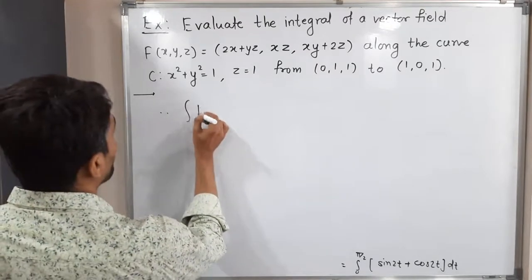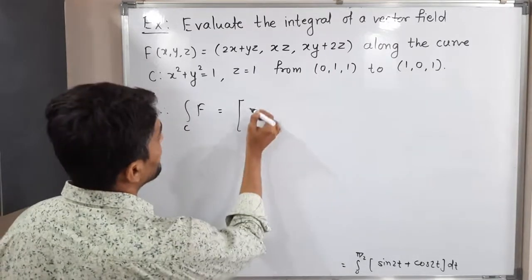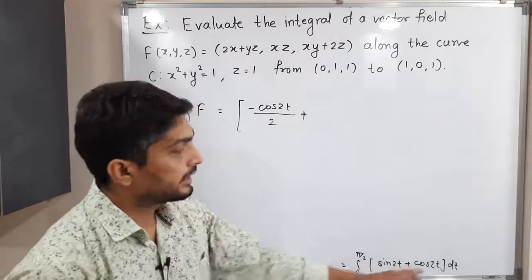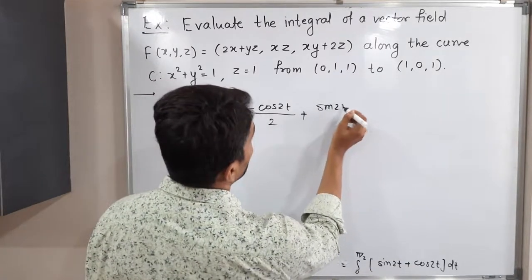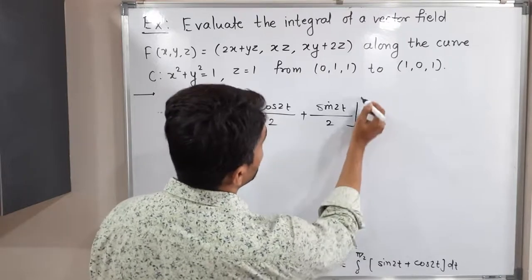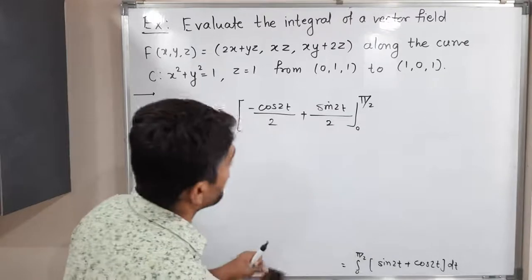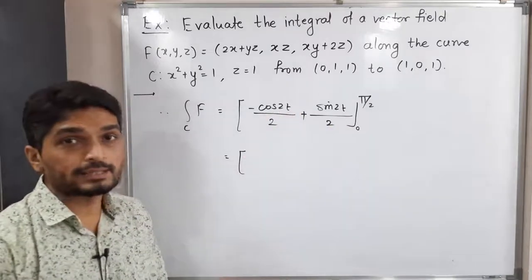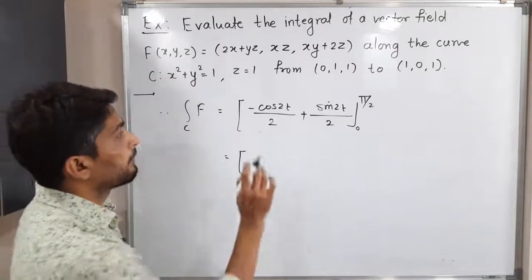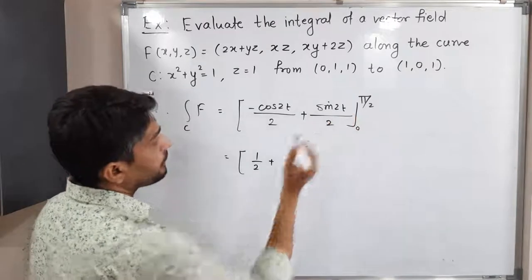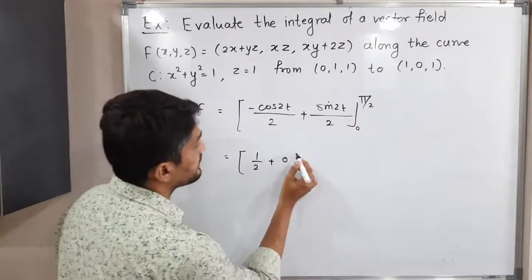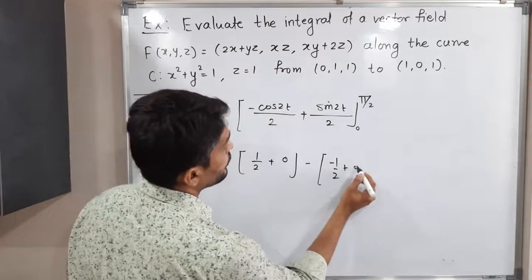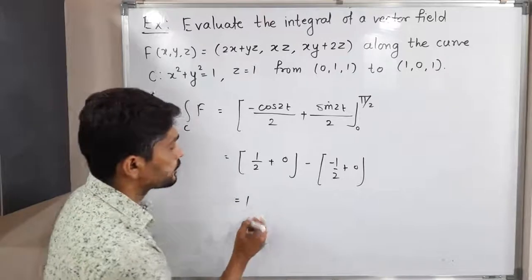The line integral of f over C equals: the integral of sin 2t gives −cos 2t / 2, and the integral of cos 2t gives sin 2t / 2, evaluated from 0 to π/2. Putting in π/2: −cos(π)/2 + sin(π)/2 = −(−1)/2 + 0 = 1/2. Putting in 0: −cos(0)/2 + sin(0)/2 = −1/2 + 0 = −1/2. So the result is 1/2 − (−1/2) = 1. This is the required answer.